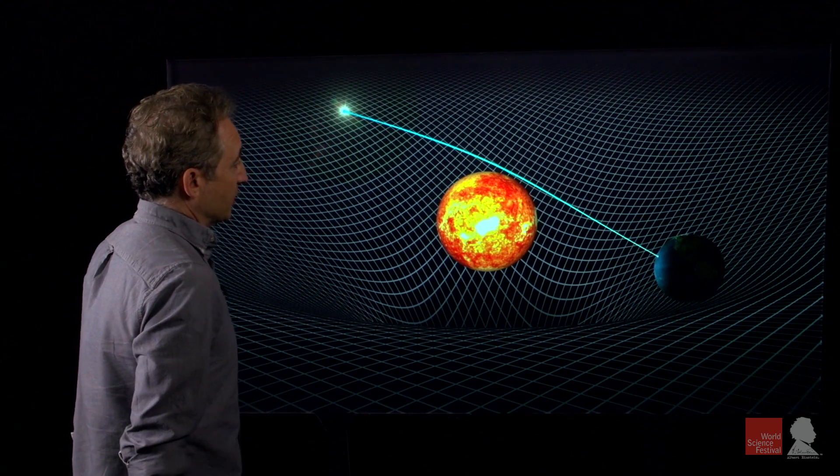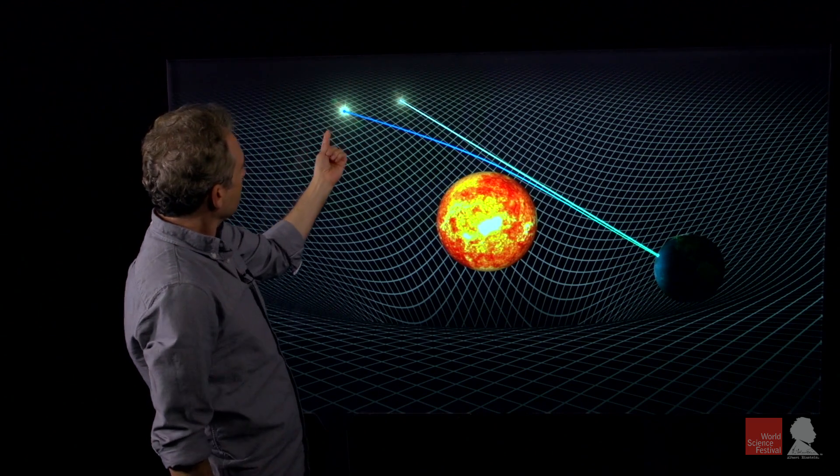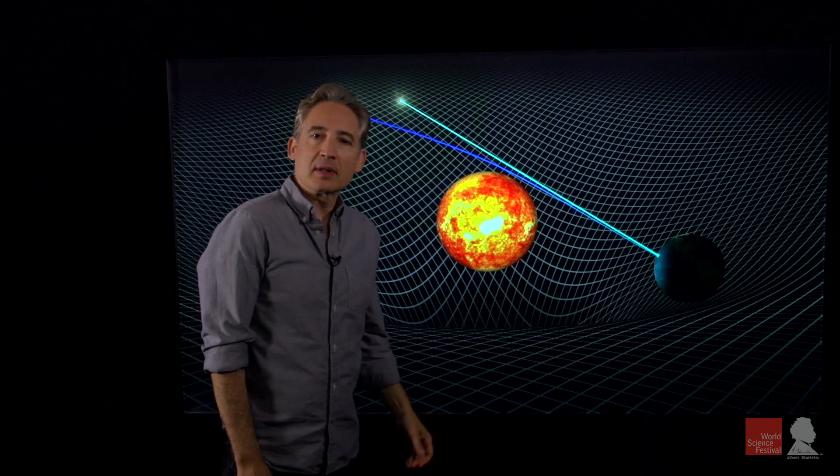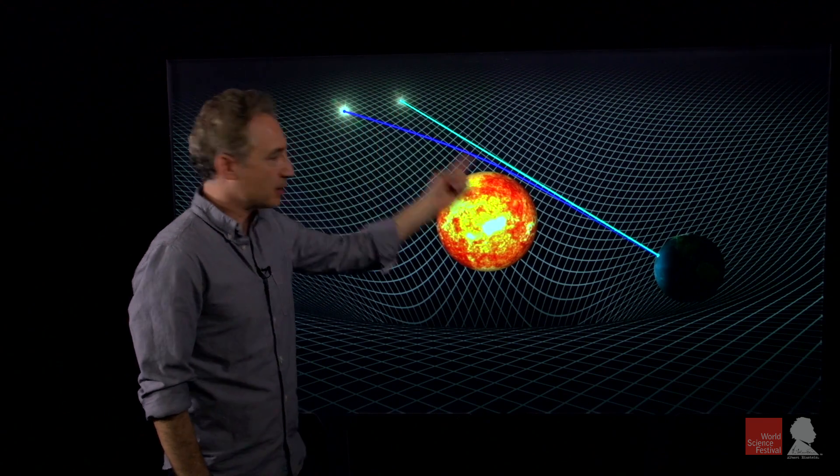And that will mean that observers on Earth will think, it will seem to them, that the position of the star in the sky has shifted from this location to this location.